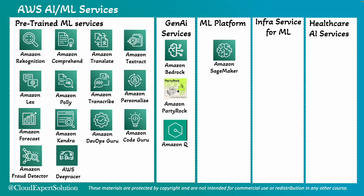Moving to the ML platform: Amazon SageMaker is a fully managed service that provides every developer and data scientist with the ability to build, train, and deploy machine learning models quickly. An example use case could be building custom machine learning models for any predictive analytics use case. AWS Deep Learning AMIs are pre-configured environments for deep learning applications, letting you quickly set up deep learning environments.